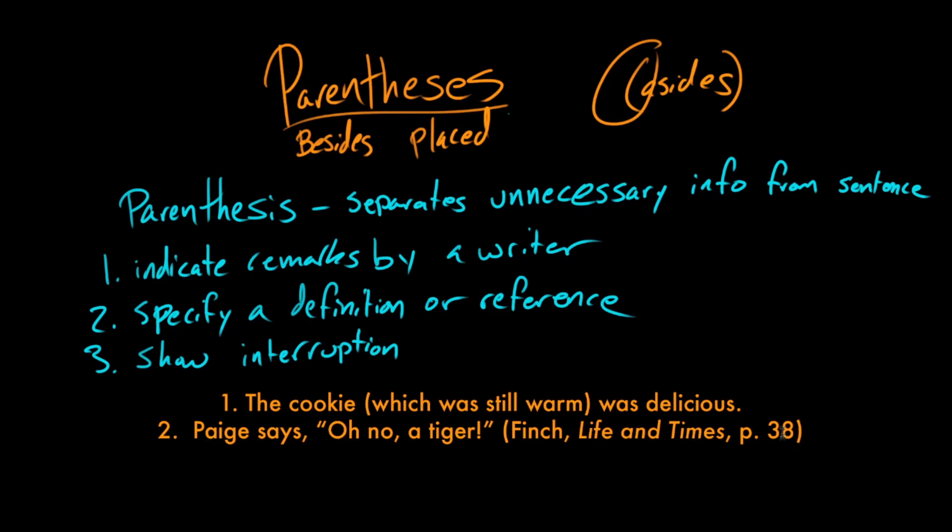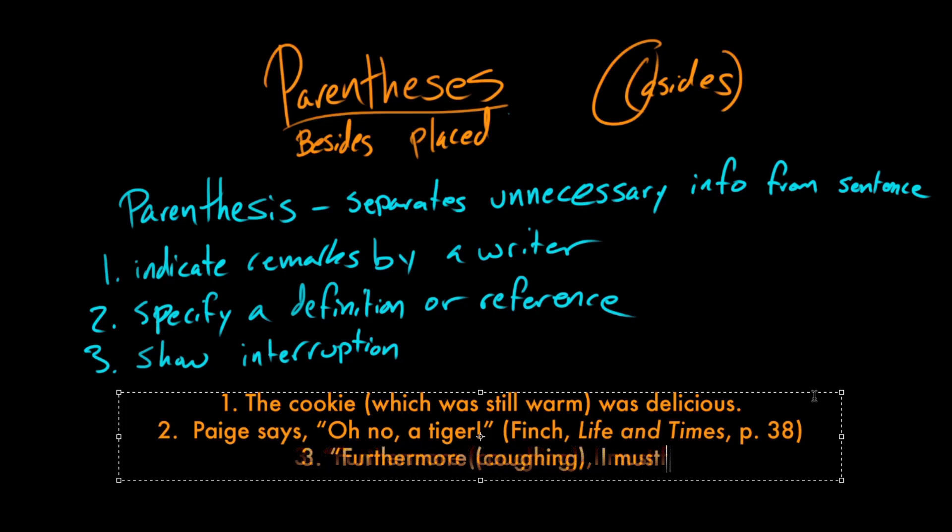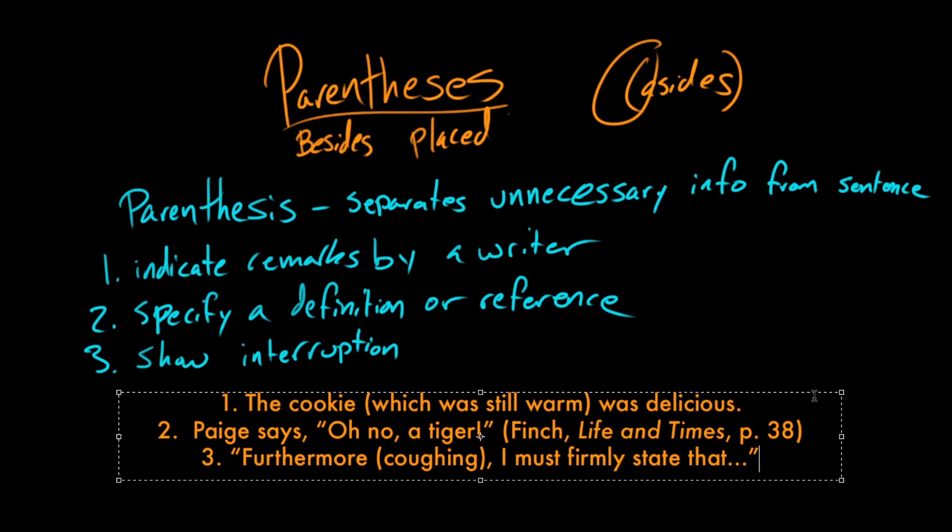So let's say you're taking down a transcript of a speech. You're typing up someone's speech, and they start coughing, and it interrupts the way they're giving a speech. Let's say I was trying to render the sentence, furthermore, I must firmly state that. So you can include the coughing in the sentence when you're writing it down or transcribing it. Like if we think this is important enough to note, we can just sort of say, coughing happened here.